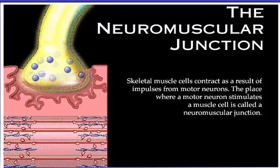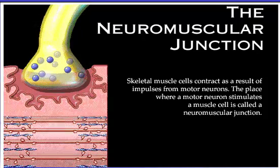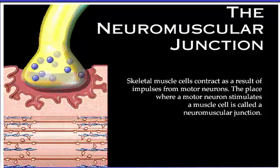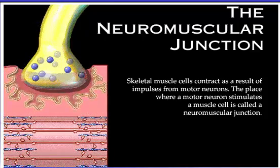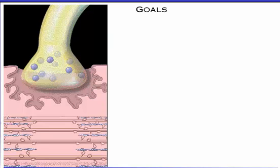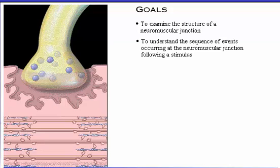Skeletal muscle cells contract as a result of impulses from motor neurons. The place where a motor neuron stimulates a muscle cell is called a neuromuscular junction. Your goals for learning are to examine the structure of a neuromuscular junction and to understand the sequence of events occurring at the neuromuscular junction following a stimulus.